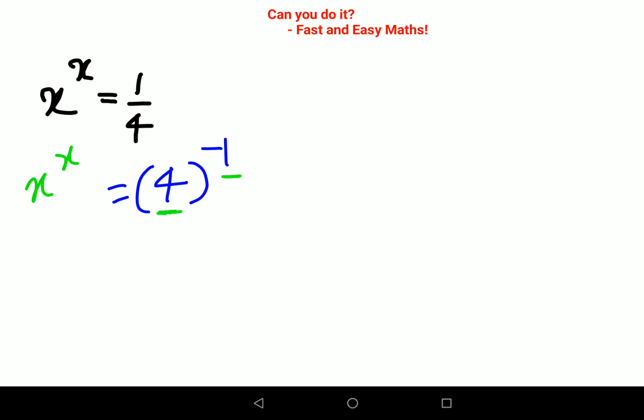So now since I know that 2 squared is also 4, I am just going to write this 4 as nothing but 2 raised to 2, the whole raised to minus 1.